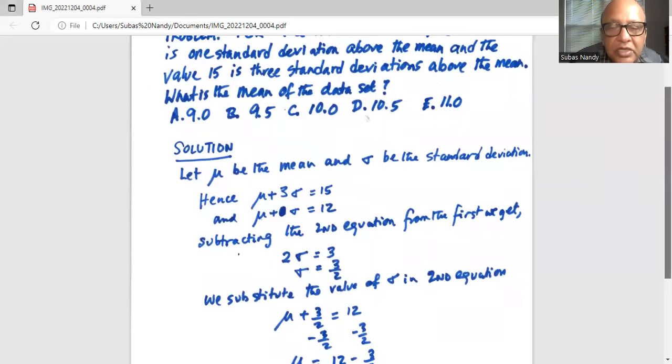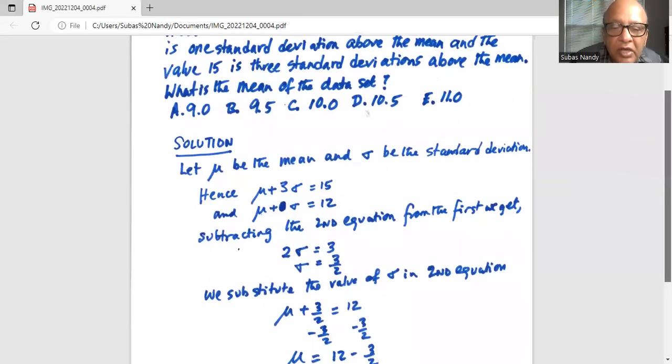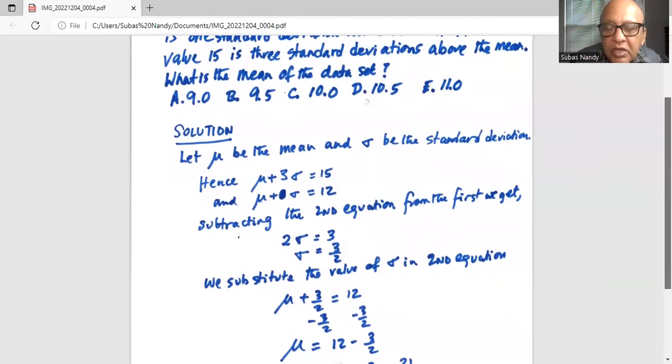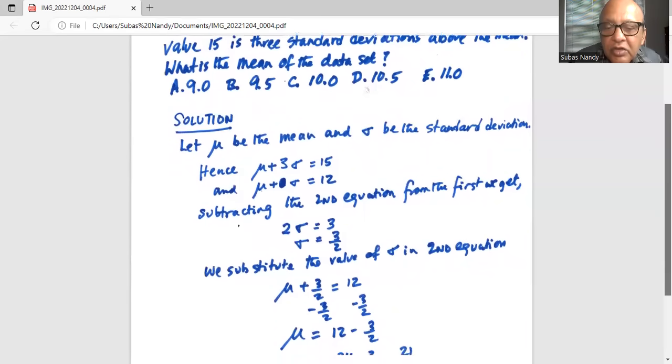So we get mu plus three over two is 12. Now we subtract three over two from both sides because we want to keep the unknown mu on the left hand side of the equation. So when we subtract three over two from the left hand side it cancels, and on the right hand side we have 12 minus 3 over 2.